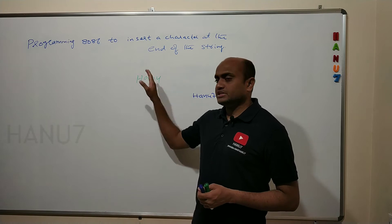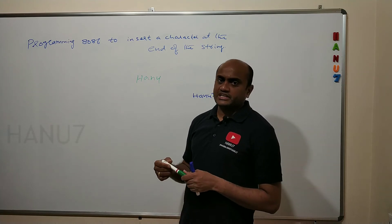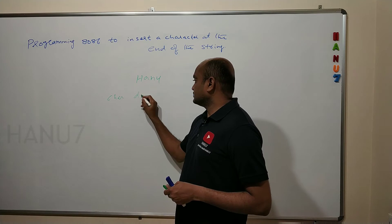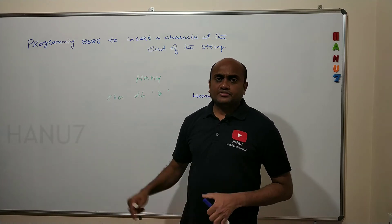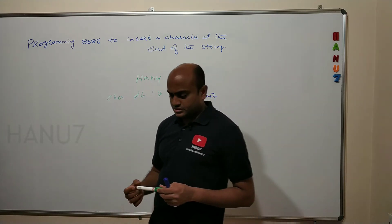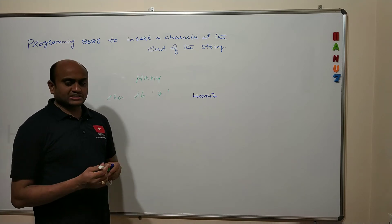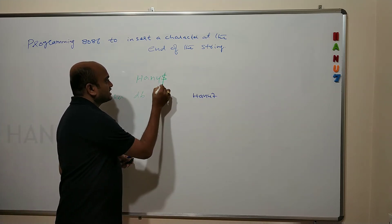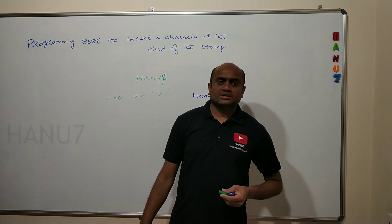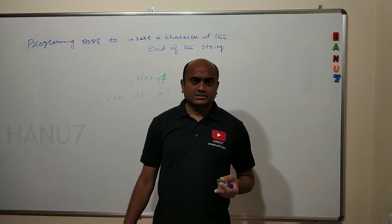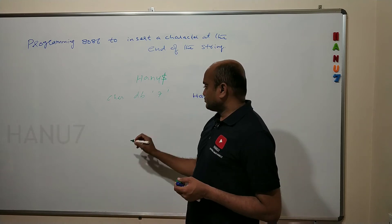The logic I am implementing is: first define HANU in the data segment, and in the same data segment also define a character — char DB '7' in single quotes — so this is the desired character to insert. After that, in the main program, we compare the input string HANU with the special character dollar '$'. Every string in the computer's memory ends with the special character dollar, so I manually include HANU$ in the input string itself.